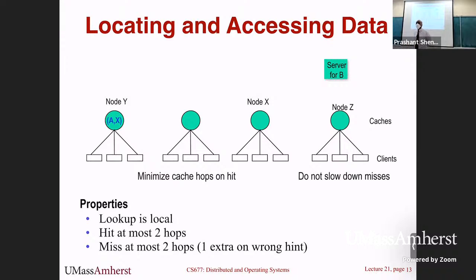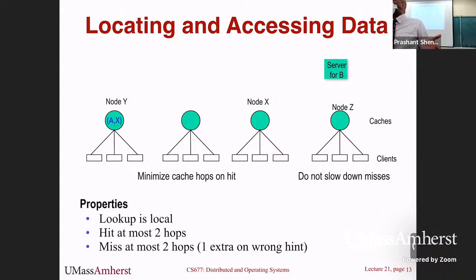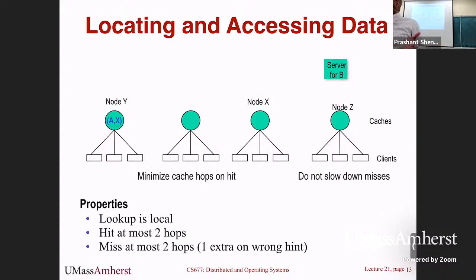If you use multicast, you don't want to send the update message to every proxy in the system — maybe only 10 proxies have this content and you don't want to waste messages sending to 10,000 proxies that don't need it. Even with multicast, you're still using network resources. You want to send it only to the proxy group that has that content, which is the reason you still want to track lease state.